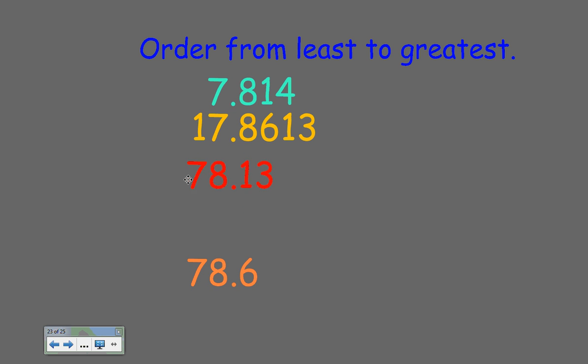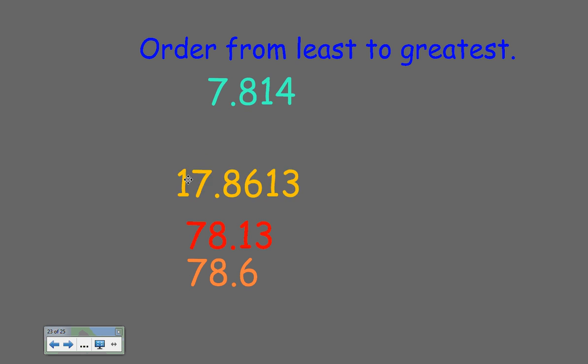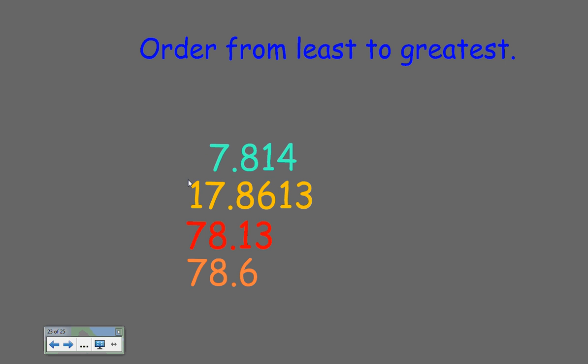Moving on to the tenths place, seventy-eight and six-tenths is the larger of those numbers, so this one will go on the bottom. Then this one is the second largest. Now comparing the top two, seventeen has a one in the tens place and the top number has a zero. So seventeen is greater than seven — move that number next. Now I should have them from least to greatest: seven and eight hundred fourteen-thousandths will be the lowest number, and seventy-eight and six-tenths will be the largest number. I hope this helped you out, and good luck with your math!